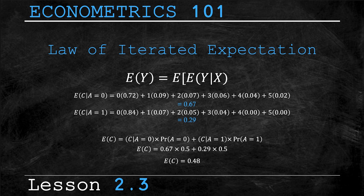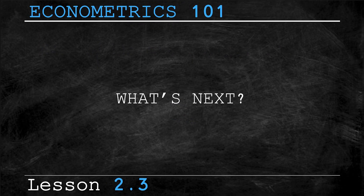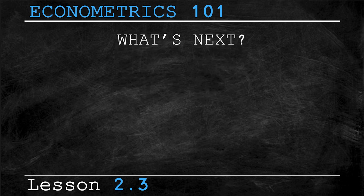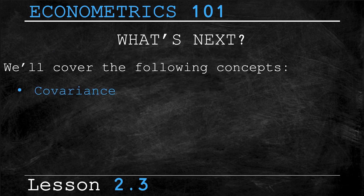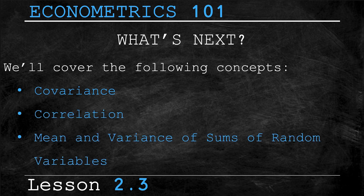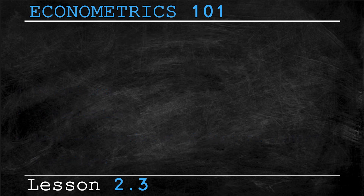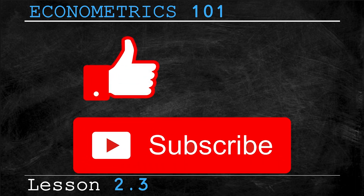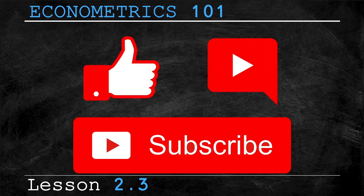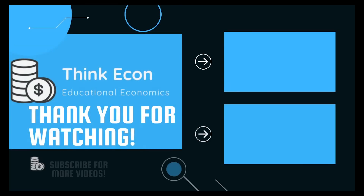The law of iterated expectation is a relatively complicated concept, so if you'd like an even deeper explanation with more examples, let us know in the comments. Next lesson we'll be covering mean and variance of sums of random variables. We are very excited to be continuing this Econometrics 101 series and hope that you are too. If you liked the video, found it helpful, and are excited to see more, let us know by liking the video, subscribing to the channel, and commenting below. This concludes lesson 2.3 — thanks for watching and we'll catch you in the next.